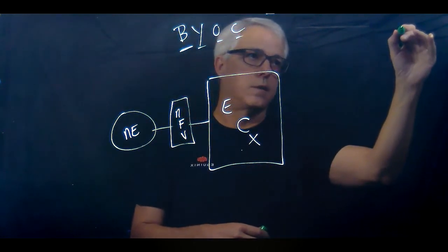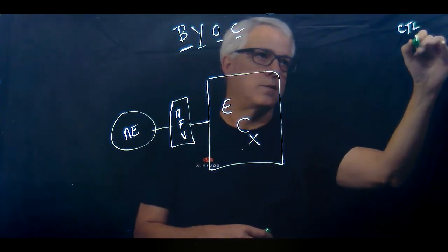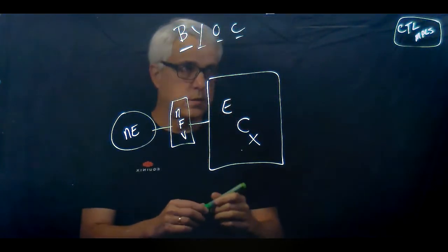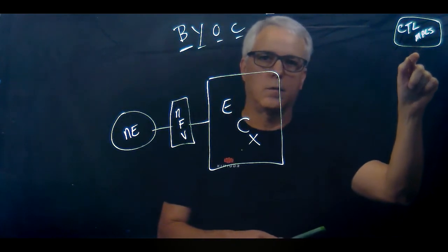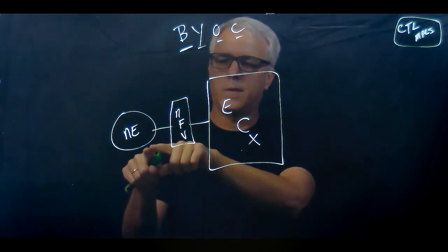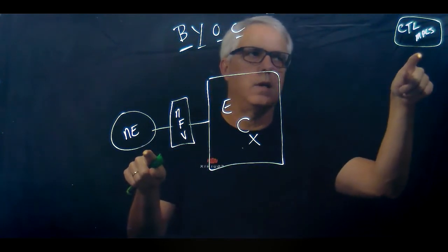Say in this case, let's say it's a CenturyLink MPLS, for example. They've got a CenturyLink MPLS network that they want to connect their WAN sites back to, and they want to have Network Edge connected into their MPLS network.